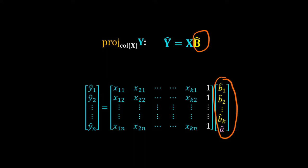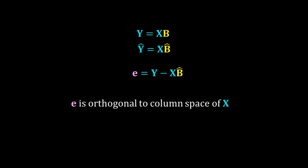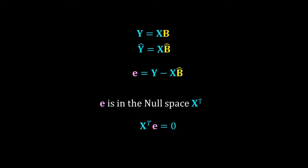We have to calculate b_hat. We will use the same method as for simple linear regression. y is not in the column space of X, but its projection y_hat is. The difference between y and y_hat is e — the error. Since y_hat is the projection of y onto the column space of X, e must be orthogonal to the column space of X, so e is in the null space of X transpose. Therefore we can write X^T * e = 0.